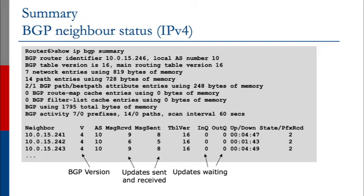you'll sometimes see values in these queues. The next column shows how long the peering has been up, or how long it has been down. The state — up or down — is shown in the final column. If you see numbers there, that shows how many prefixes have been received. If you see status messages like 'no connect' and so forth, then the peering is considered down.